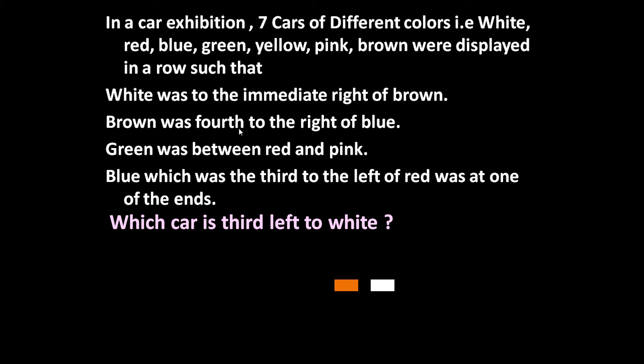Second: brown was fourth to the right of blue. This is the right side of blue. So if blue is here, brown is fourth right—one, two, three, and four. So brown is here, blue is here. In between these two, three more cars will occupy the space.